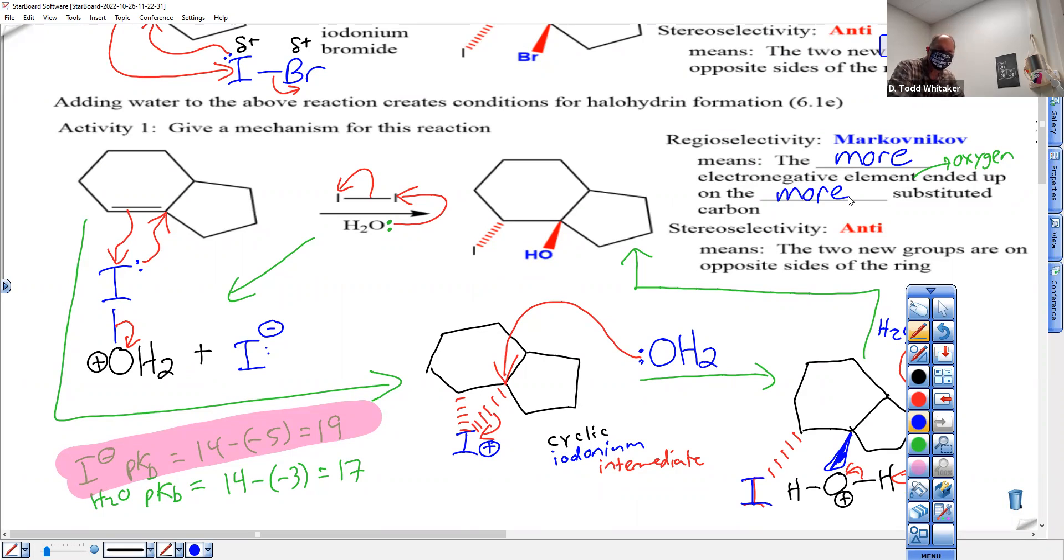Anti just has to do with wedges and dashes. Backside attack, which happened right here. Backside attack always makes sure those bonds are opposite because you're breaking the dash. You can only break it by making a wedge, because that's the backside. Backside attack. And I believe that's all I need to say about this one.